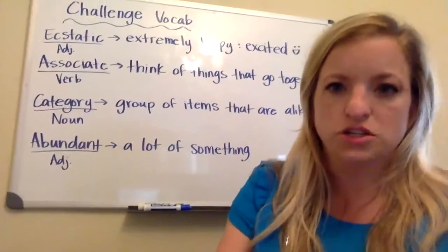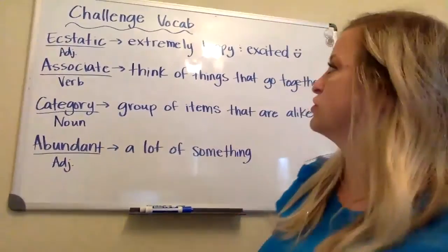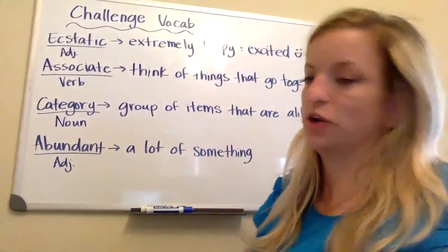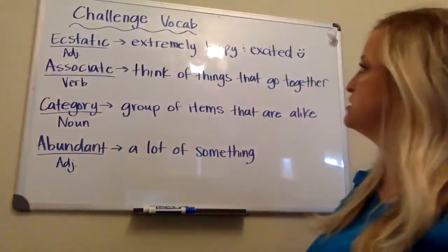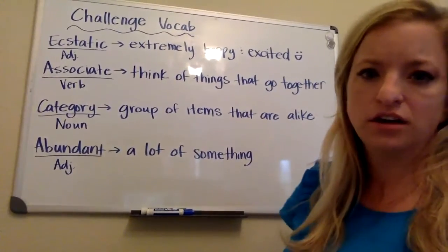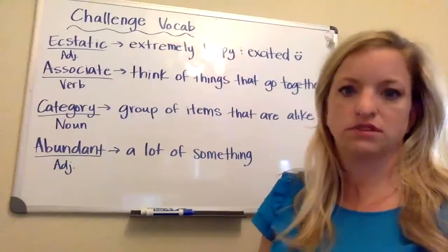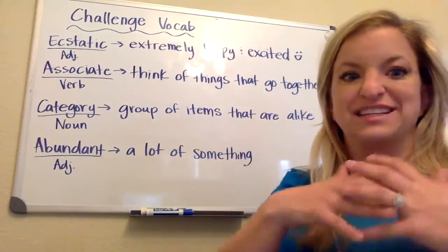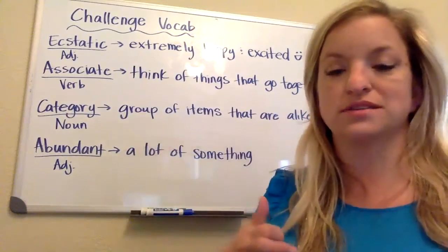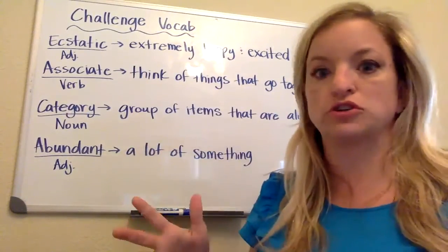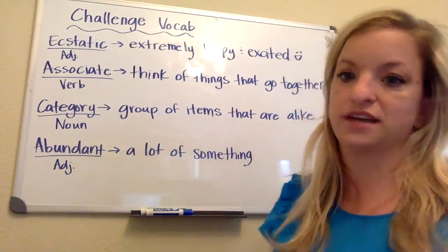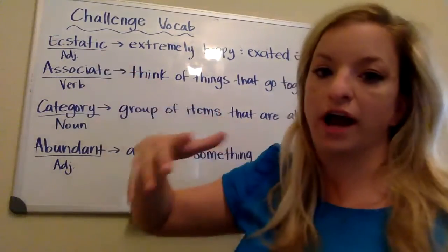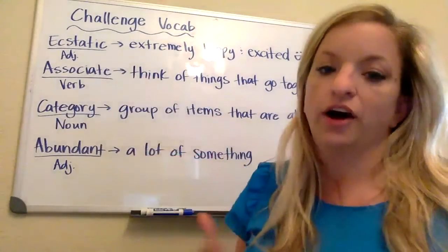I wanted to define what these words are. So the first one is ecstatic — it means extremely happy and excited. I don't know if you can see with the glare, but it means, like, I'm ecstatic to see you guys — that means I am just overjoyed, super happy and excited to see you. It's an adjective, so it describes how you're feeling.